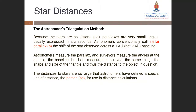Astronomers measure the parallax; surveyors measure the angle at the ends of the baseline. Both measurements reveal the same thing: the shape and size of the triangle, and therefore the distance to the object in question. The distances to stars are so large that astronomers have defined a special unit of distance — the parsec — for use in distance calculations. The parallax triangular method is also one method you can use to calculate distances in your moon assignment.